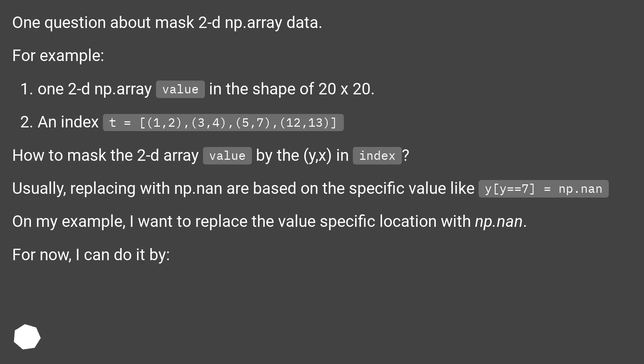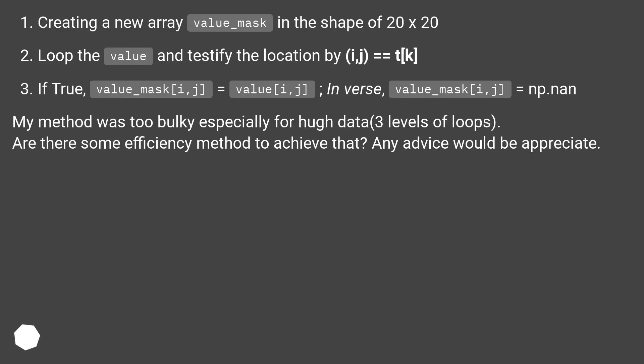For now, I can do it by creating a new array value_mask in the shape of 20 by 20. Loop the value and testify the location by i,j equals tk. If true, value_mask[i,j] = value[i,j]. Inverse, value_mask[i,j] = np.nan.